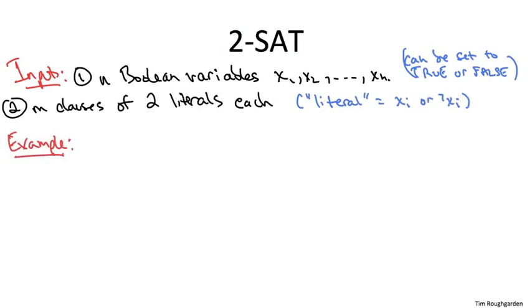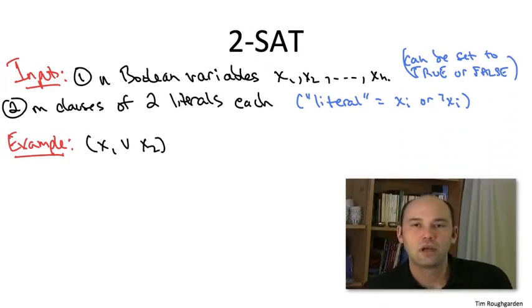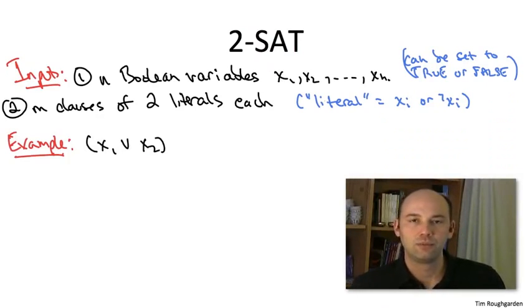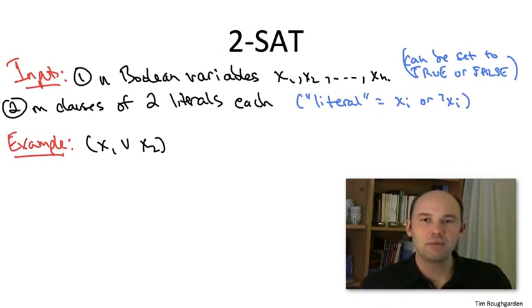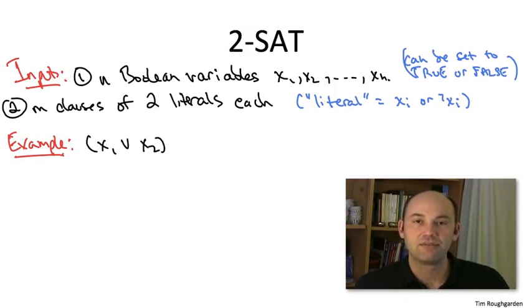Here's an example to make this clearer. The example has four variables and four clauses. The variables are x1 through x4. So the first clause is x1 or x2, using this V symbol to denote logical or.